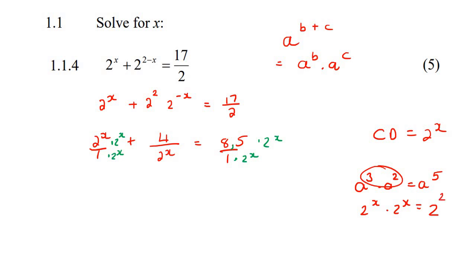Let's write that better, 2x. So that's going to become 2 to the 2x plus 4 equals 8.5 times 2 to the x.